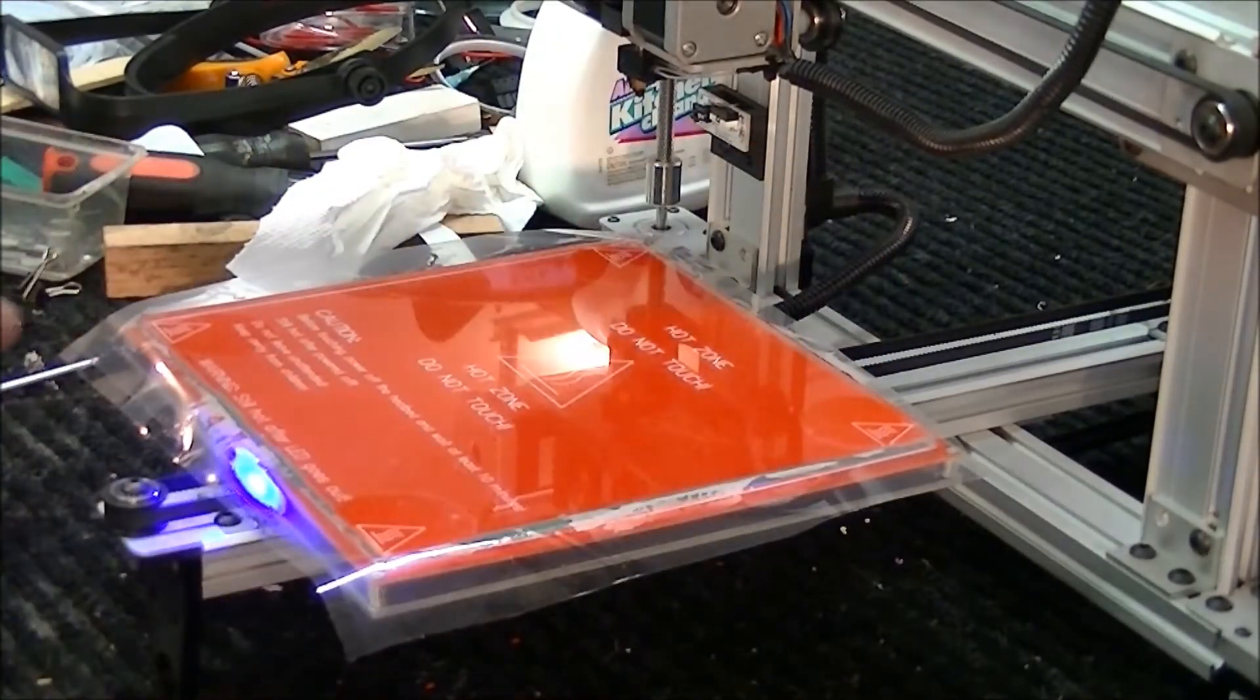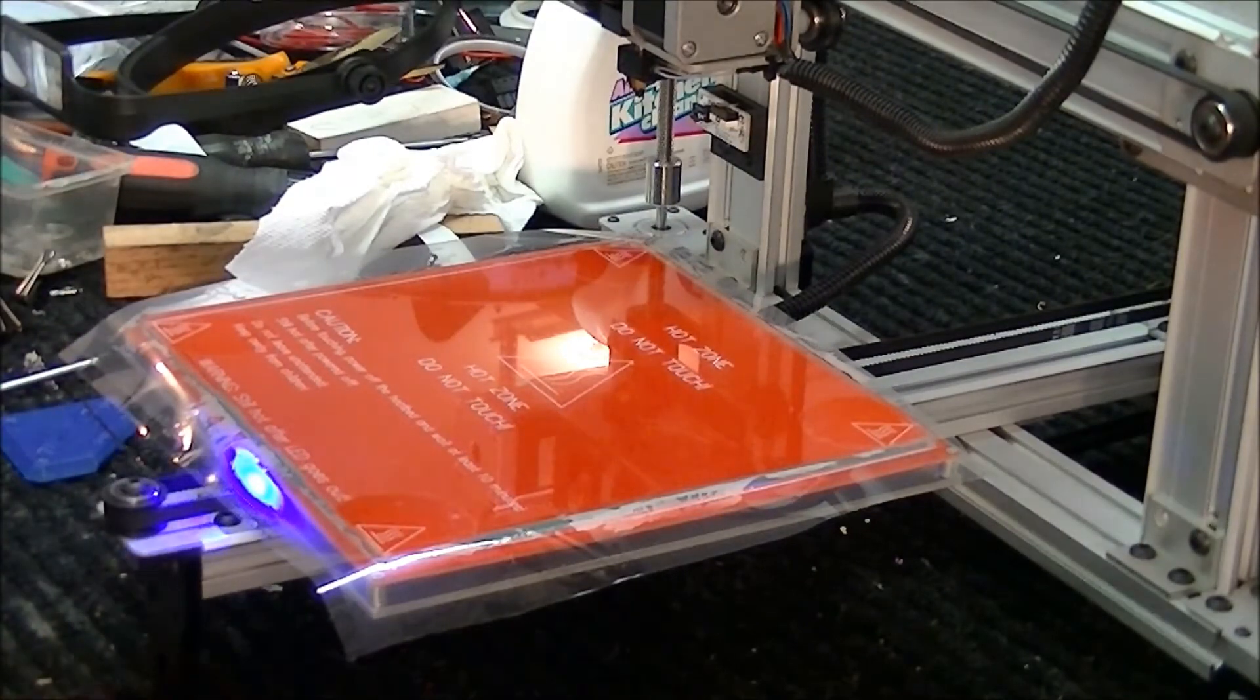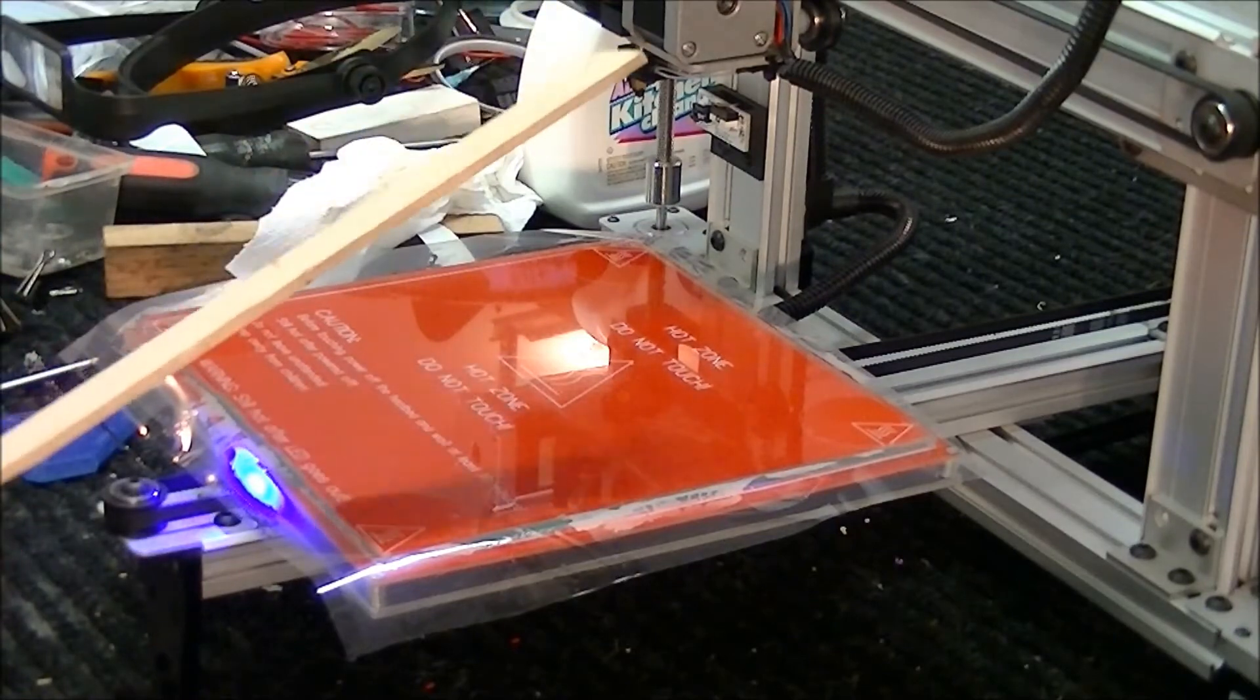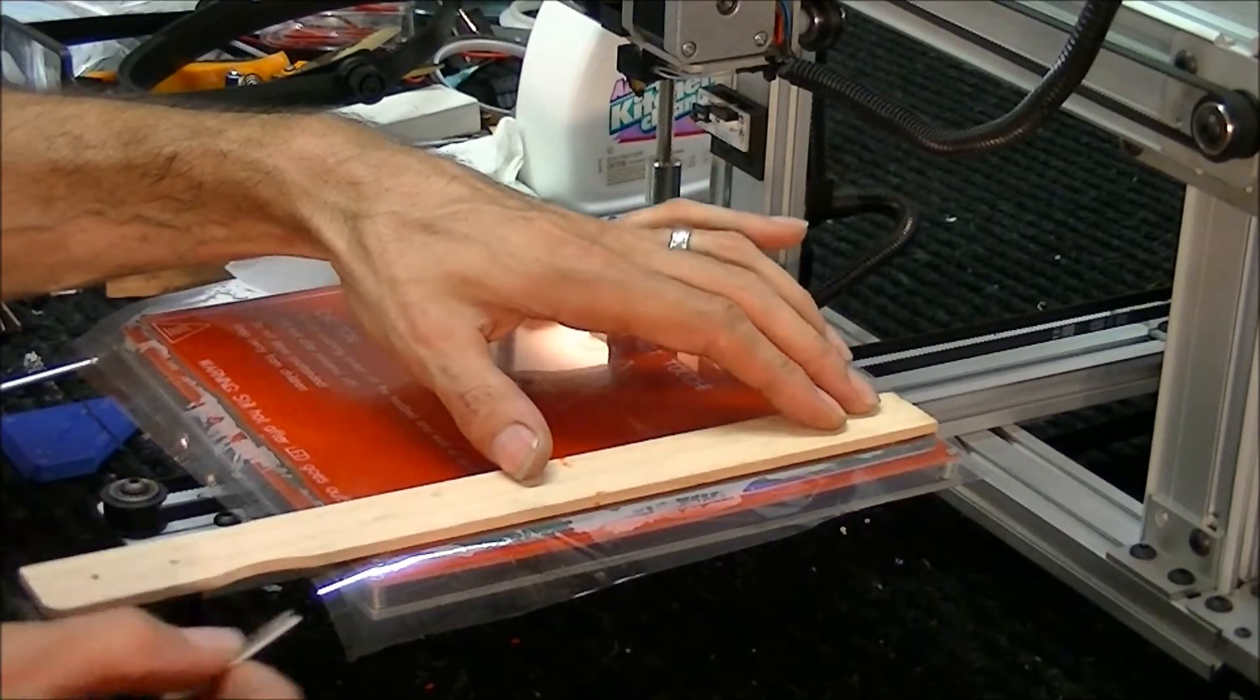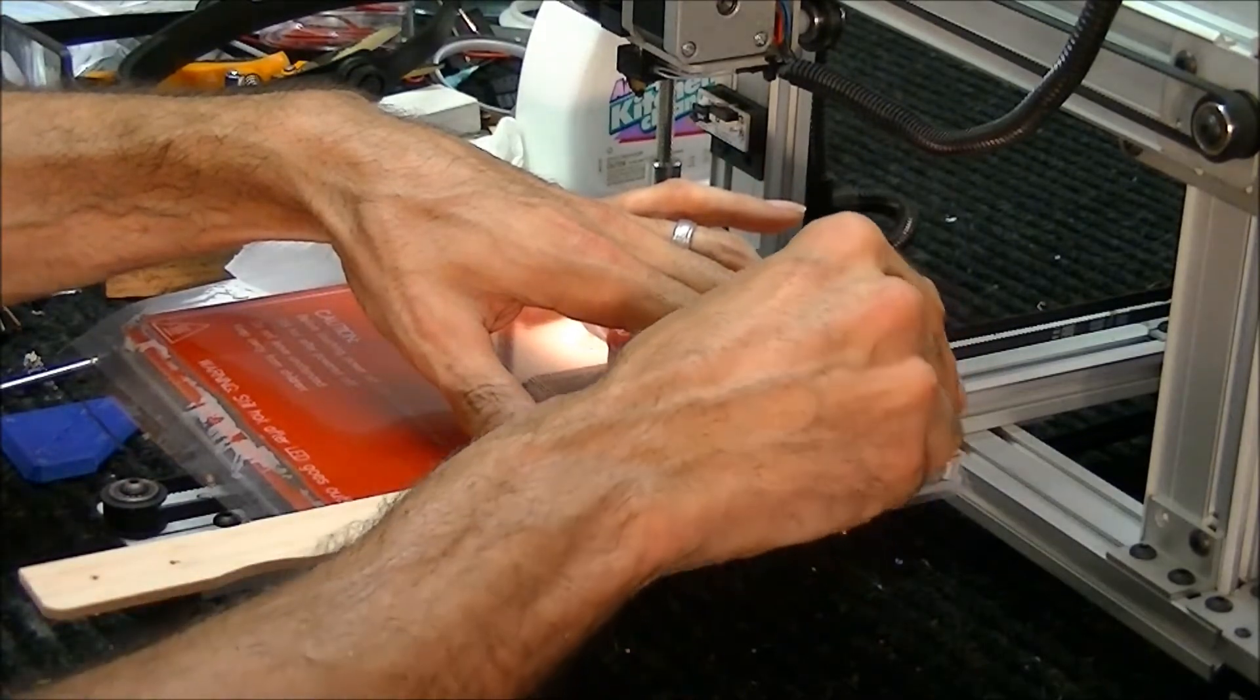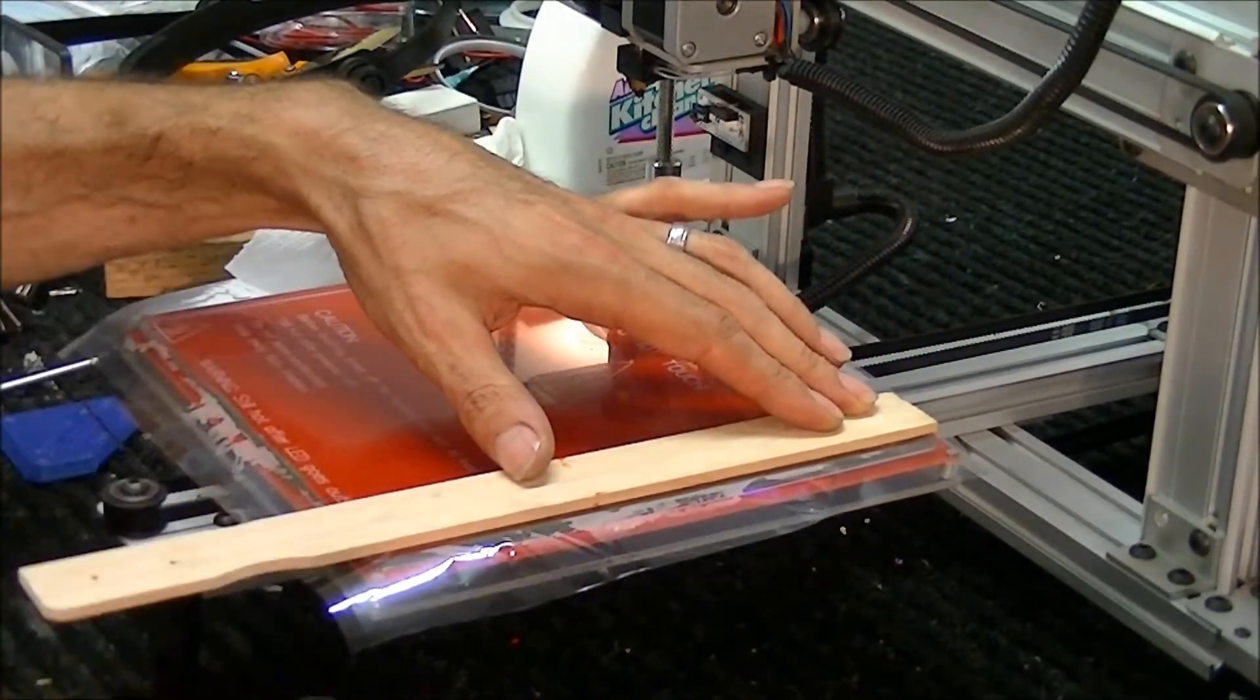Don't worry about the edges too much right now because they may curl up or whatever, but we're going to cut it and then we're going to squeegee it down again. Those edges will stick down once we turn the heat up a little bit. So what I'm doing, I'm just putting a straight edge that's going to be a little bit off the edge of the glass. I go in about an eighth of an inch because you don't want those edges out there because it can cause it to peel out.